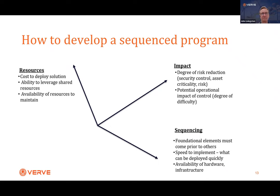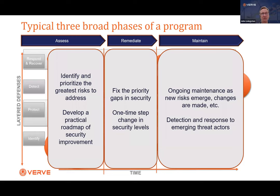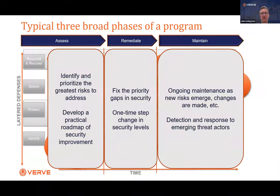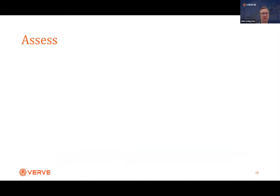There are really three phases to a program build. The first phase is assessment — identifying and prioritizing risk and building the roadmap. The second is the remediation phase — a step-change improvement in security levels: patching critical vulnerabilities, segmenting the network, and so on. The third is the maintenance phase — ongoing maintenance and improvement of security posture over time, and ongoing detection of new threats and response. These phases build on each other, so you need to think ahead.